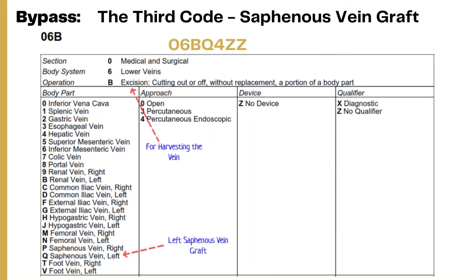The third code is for the harvesting of the saphenous vein graft used to perform the bypass procedures. Section: medical and surgical. Body system: lower veins. Root operation: excision, because a part of the saphenous vein was cut and used as a graft. Body part: left saphenous vein. Approach: percutaneous endoscopic, because it was harvested endoscopically. Sixth character: no device. Seventh character: no qualifier. The code is 0 6 B Q 4 Z Z.